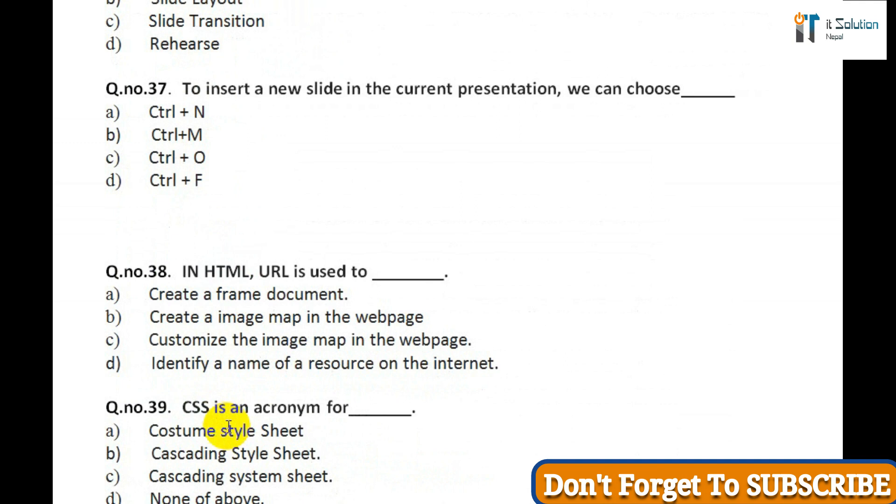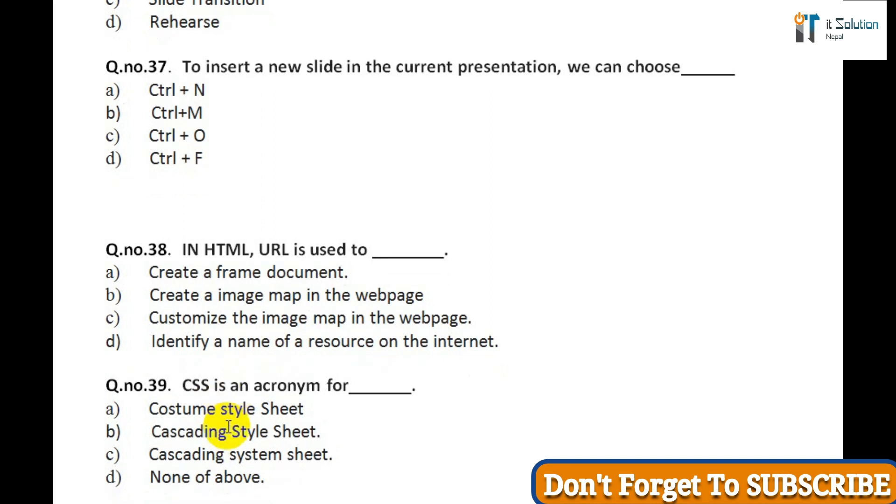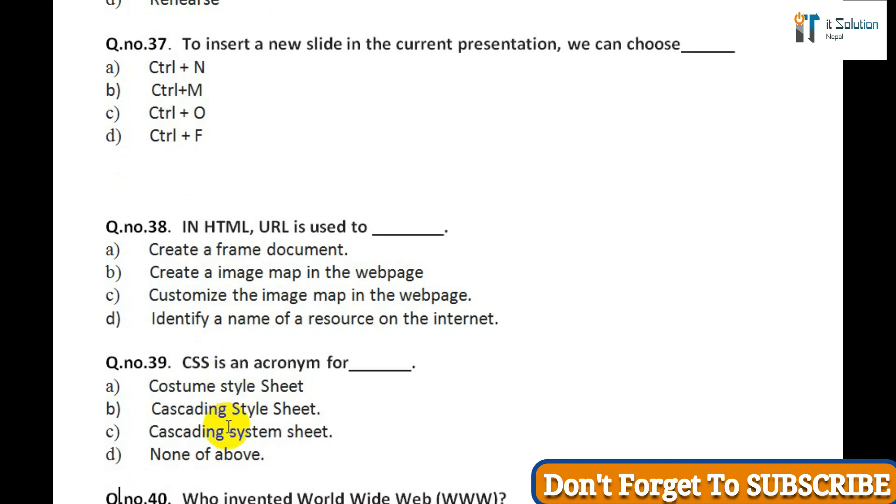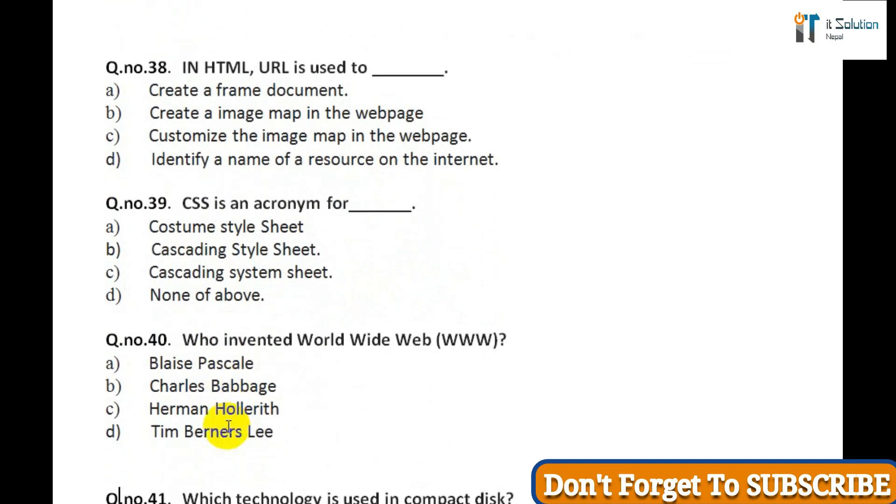Question thirty-two: Manager's salary details are hidden from the employee. This is: A) Conceptual level data hiding, B) Physical level data hiding, C) External level hiding, D) None of above. Question thirty-three: Which of the following products is relational DBMS? A) FoxPro, B) Oracle, C) dBase, D) None. Question thirty-four: The following are functions of DBMS except: A) Creating database, B) Creating and processing forms, C) Processing data, D) Administering database.